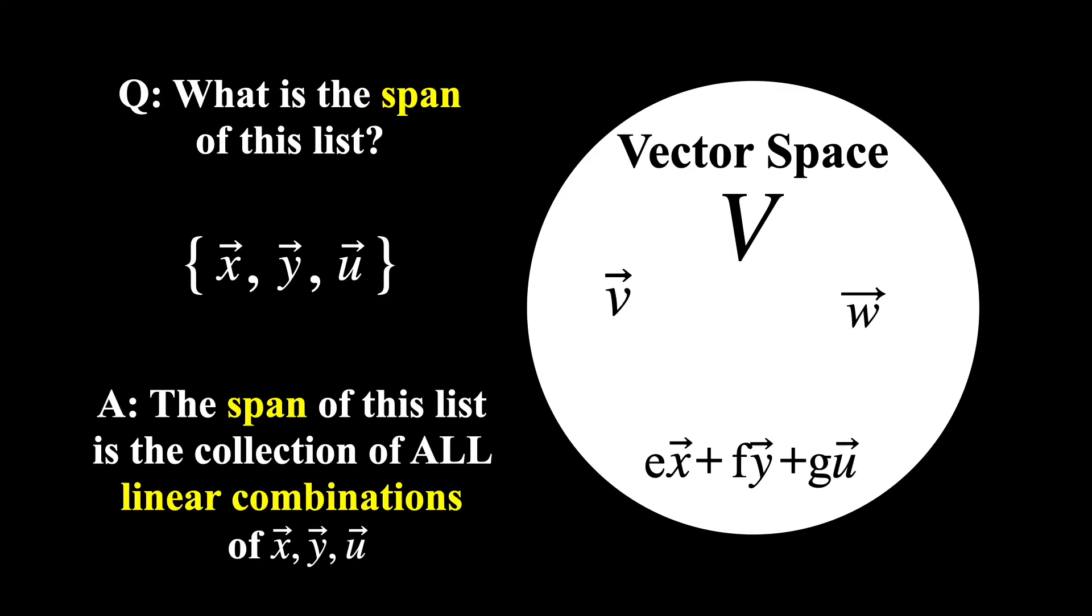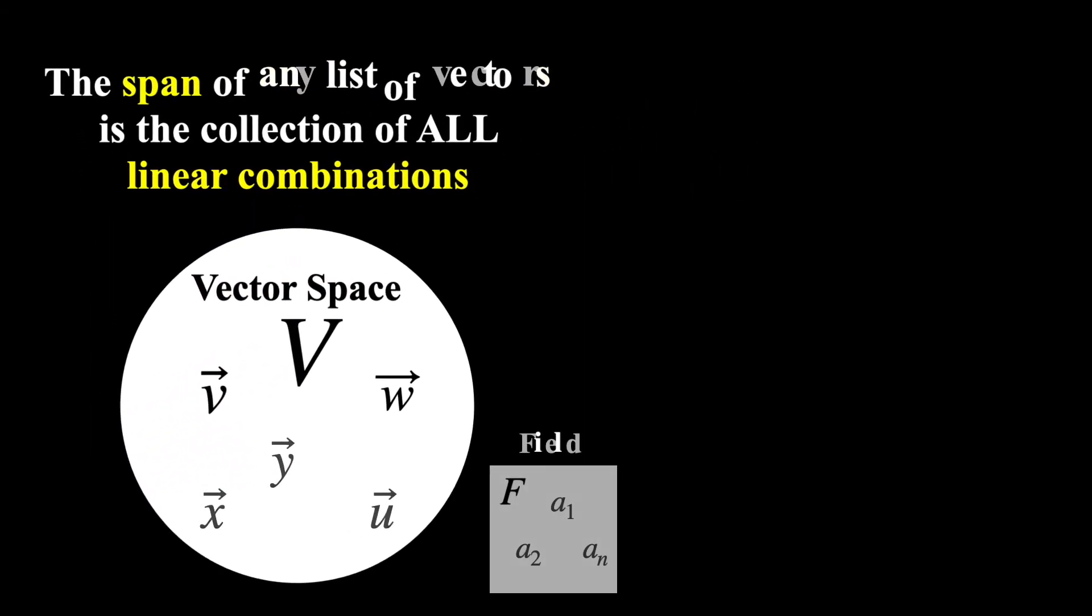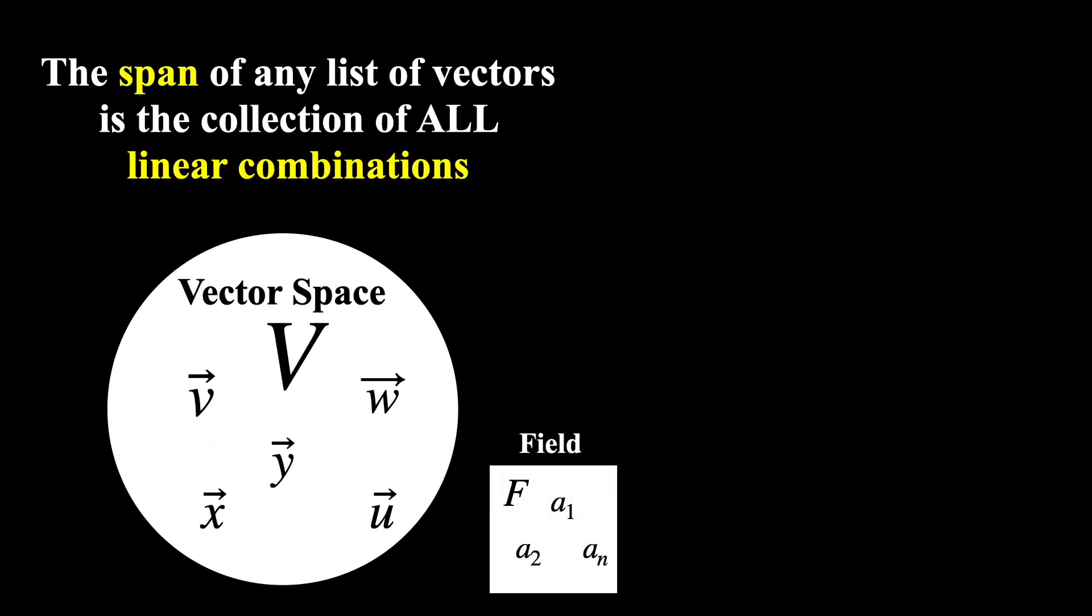And in general, for any list of vectors, the span will be the collection of all linear combinations of the vectors that make up the list, with the scalars coming from whatever the underlying field is. So if the list contained n vectors written in this way, then the span would be the following set.